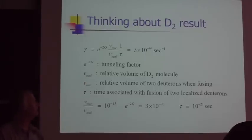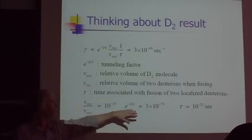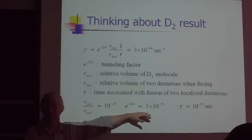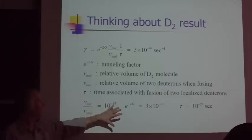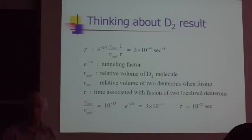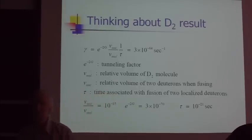It turns out from this calculation, you've got a tunneling factor about 3 times 10^-70, a very small number. The change in volume from molecular scale to nuclear scale is angstroms down to barns cubed, so 10^-15. And if we plug this in and compare with the calculated rate, we get a time on the order of 10^-21 seconds.